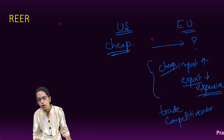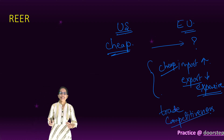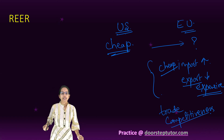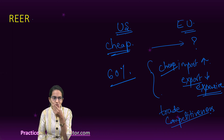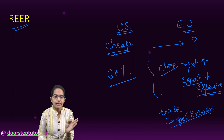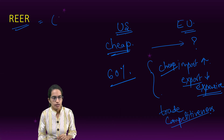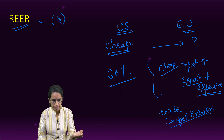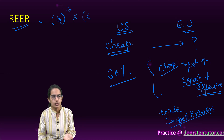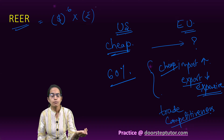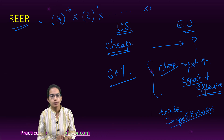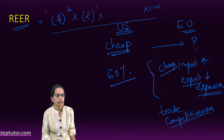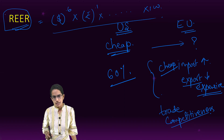The European Union region would lose its trade competitiveness because it is highly dependent on the United States. Now if 60% of the EU's trade happens with the US, then the real effective exchange rate would be: US dollar exchange rate raised to power 0.6, multiplied by the INR exchange rate raised to power 0.1 (if India's trade share is 10%), and so on for other countries, all multiplied by 100. That is how we calculate the real effective exchange rate.